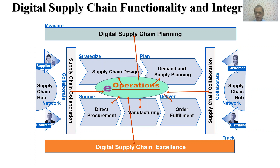These are the various functionalities and how they are going to get integrated. You have to achieve excellence in all these activities — excellence with the customers, excellence with the suppliers, excellence in your manufacturing, excellence in your quality, excellence in achieving the best benefits from your manufacturing locations and equipment. You have to define KPIs, measure all of this, and track orders and delivery.